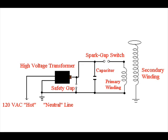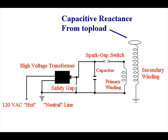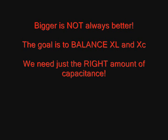The secondary circuit also has inductive and capacitive reactance. Inductive reactance comes from the secondary winding, and capacitive reactance comes from the output terminal or top load. A terminal with more surface area and volume will have more capacitance. However, one common mistake is to assume that a bigger top load is always better — this is not the case. The goal is to have just the right amount of capacitance; if there is too much terminal capacitance, the circuit won't be in balance and we won't have resonance. If the top load is too big, it can actually result in very poor output from the Tesla coil.